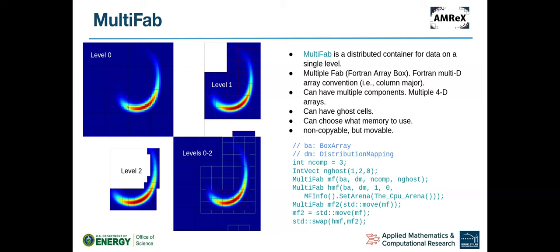On the left, I show examples from a three-level AMR simulation. On level zero, the data covers the entire domain but at low resolution. Level one covers part of the domain where there are interesting features to resolve, and level two provides even higher resolution. MultiFab holds the data for each individual level, and if you put them all together you get the composite solution from level zero to level two.